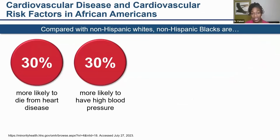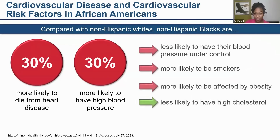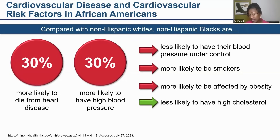Looking at cardiovascular disease among African Americans compared to non-Hispanic whites: African Americans are 30 percent more likely to die from heart disease, 30 percent more likely to have high blood pressure, less likely to have their blood pressure under control, more likely to be smokers, and more likely to be affected by obesity. One good thing — they are less likely to have high cholesterol. These disparities represent a real opportunity to intervene.